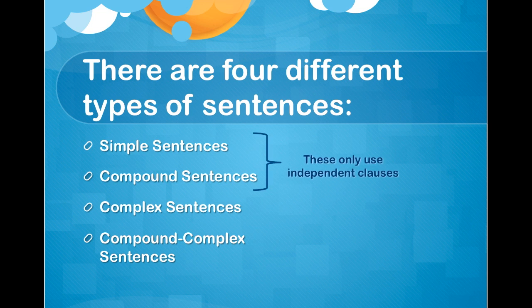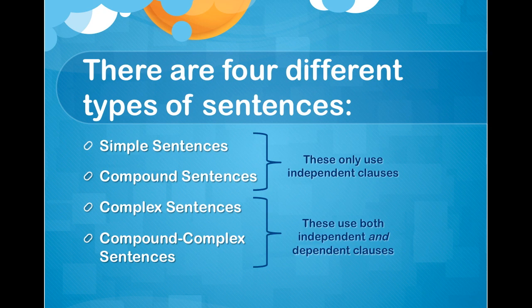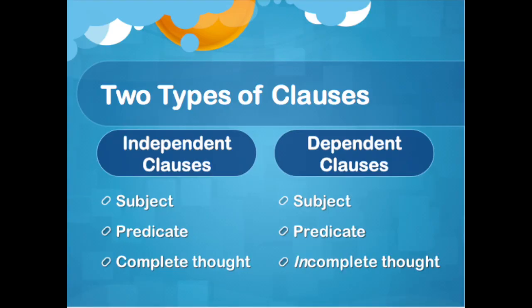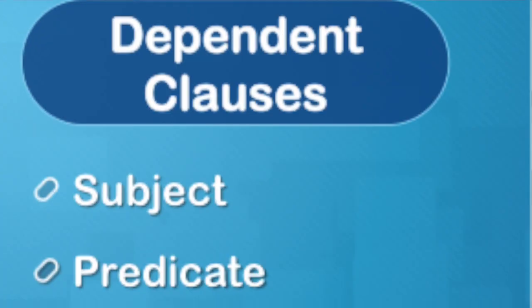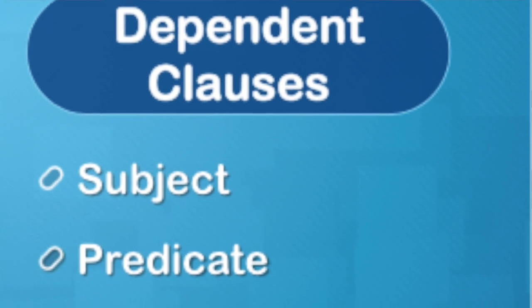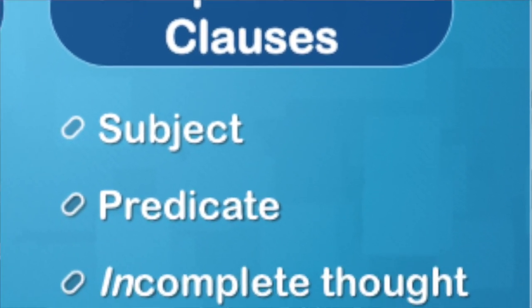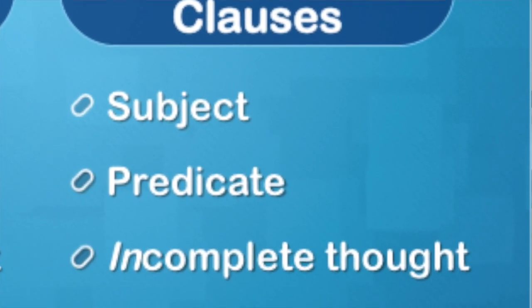Because while simple and compound sentences only use independent clauses, complex and compound-complex sentences use independent clauses and dependent clauses. So a dependent clause is a clause that has an incomplete thought. Just like the independent clause, a dependent clause also has a subject and a predicate, but it has an incomplete thought rather than a complete thought.